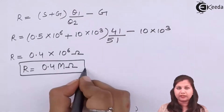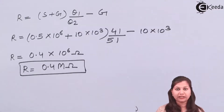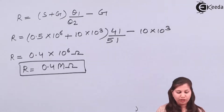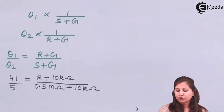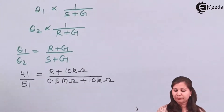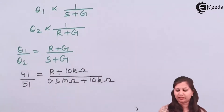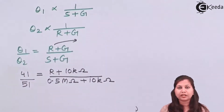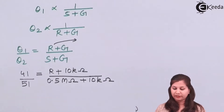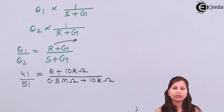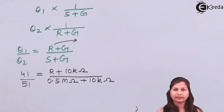Keep in mind that the deflection of the galvanometer is directly proportional to the current flowing in the circuit. Since current and resistance are inversely proportional, deflection is inversely proportional to resistance. Using this principle and the substitution method formula, you can find the value of the unknown resistance. In this video we solved a problem on measuring unknown resistance using the substitution method, where the unknown resistance is substituted by a standard resistance. I hope this problem is clear to you. Thank you.